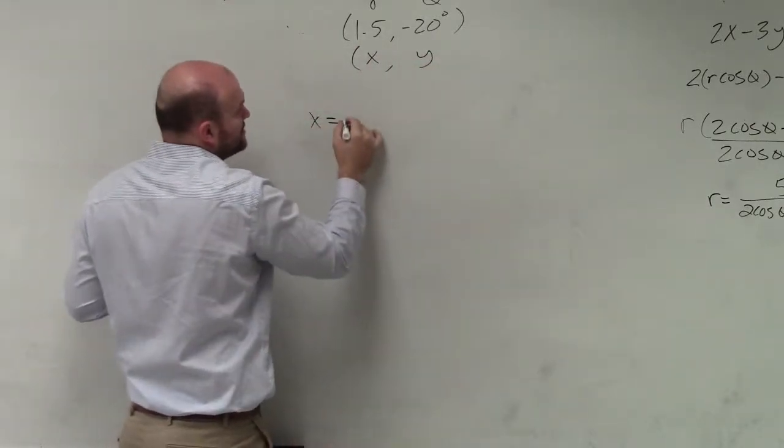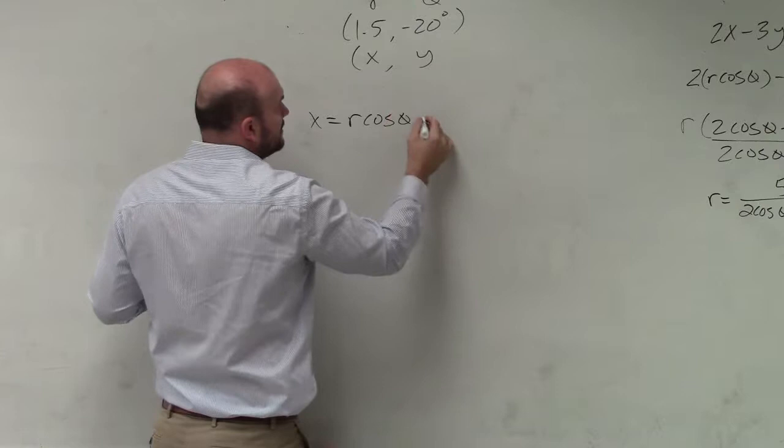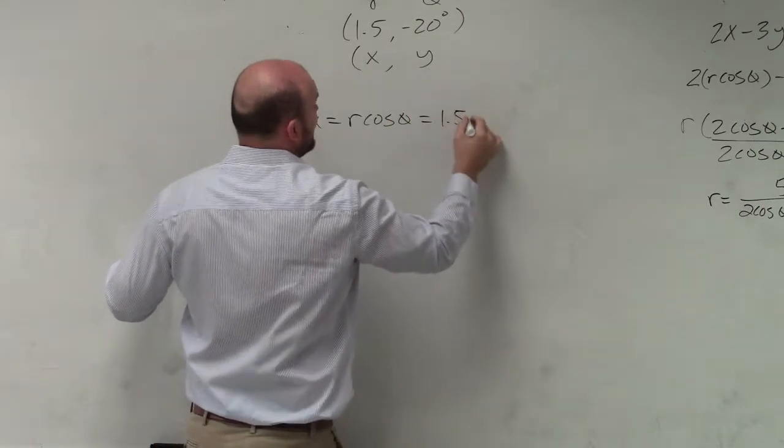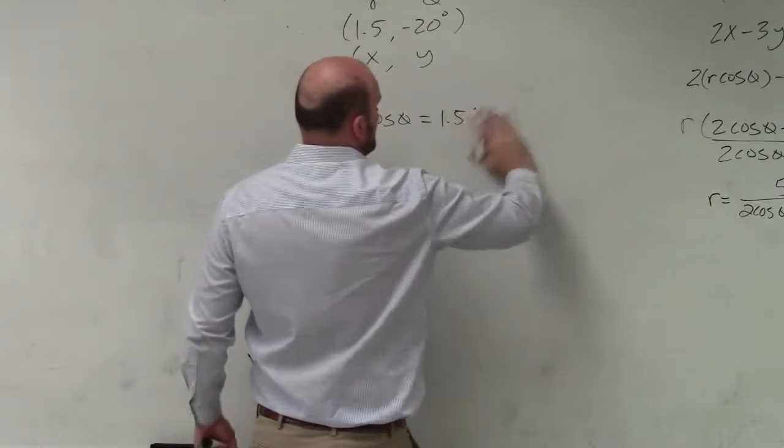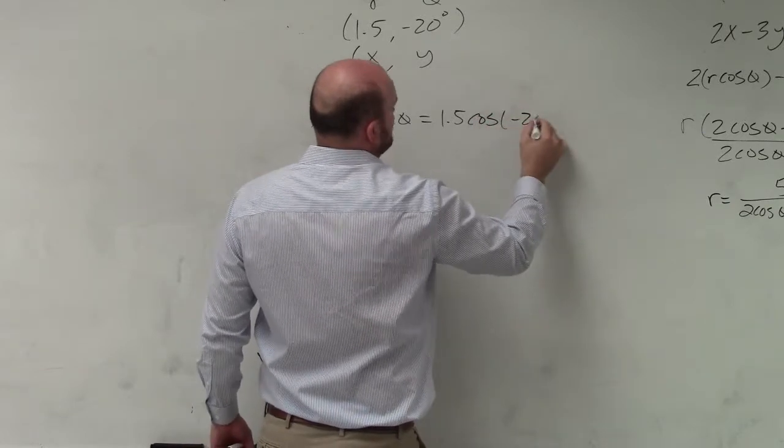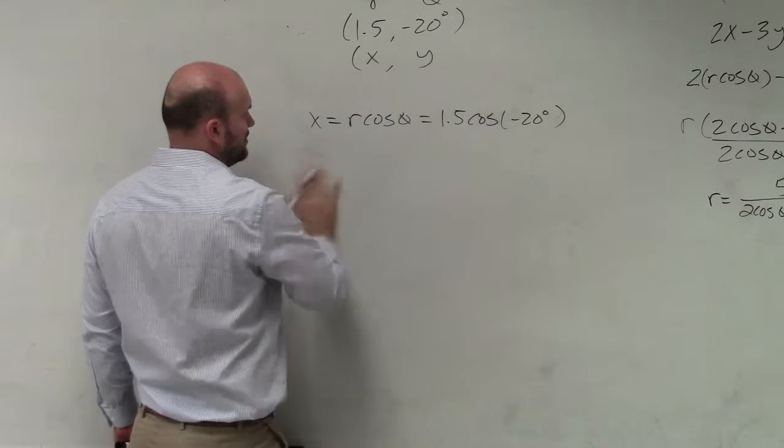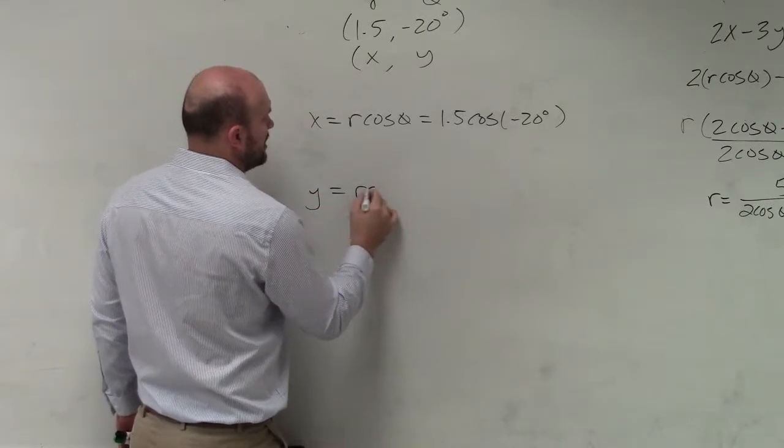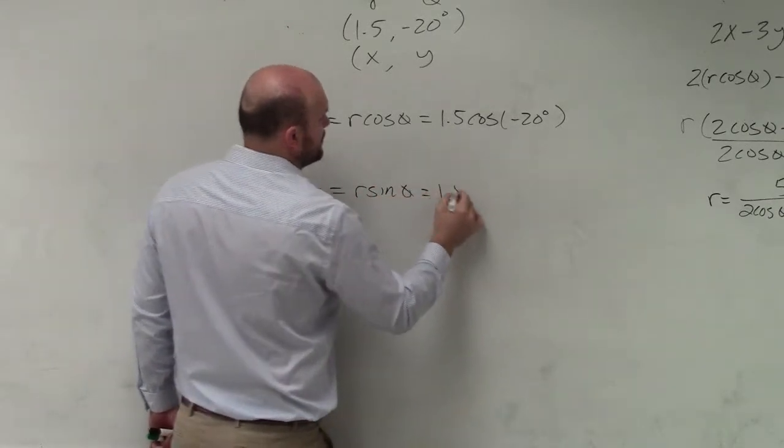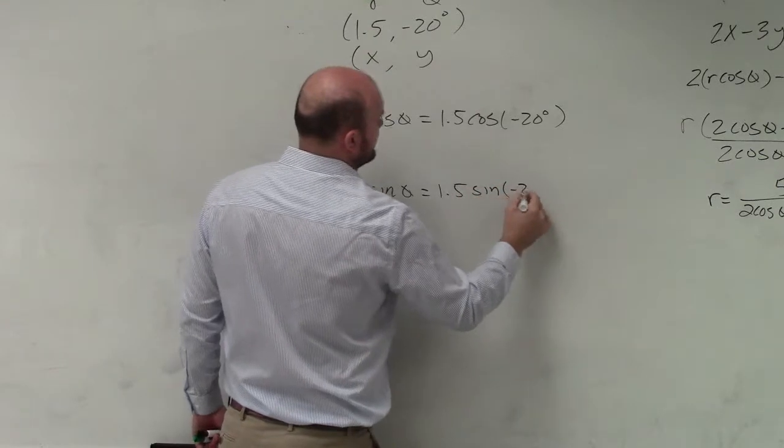So we know x equals r times cosine of theta. So in this example, it's 1.5 times the cosine of negative 20 degrees. And y, let's do a little bit lower, y equals r sine of theta, which is 1.5 times the sine of negative 20 degrees.